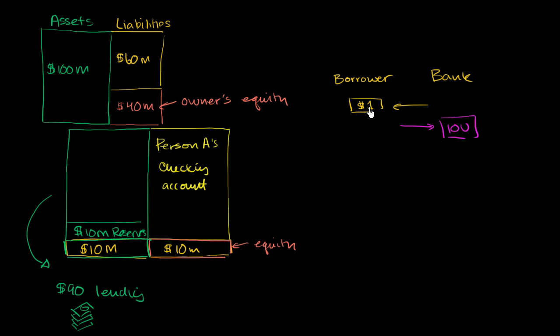From the borrower's point of view, the dollar is an asset and this IOU is a liability. But from the bank's point of view, they're like, oh, I have this IOU. Maybe I could give this to someone else. Maybe I could sell this IOU. This IOU is going to give me future benefit, because assuming this person is good for their money, they're going to give that money back.